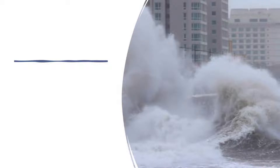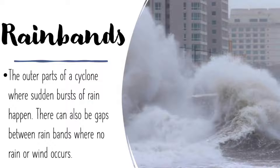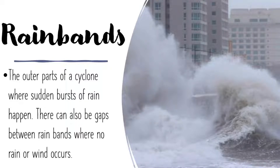The last part of a tropical cyclone is the rain bands. Rain bands are the outer parts of a cyclone where certain bursts of rain happen. There can also be gaps between rain bands where no rain or wind occurs. In short, if you experience rain bands, there are sometimes periods of no rain or wind, and then frequently rain or wind happens in a certain area.